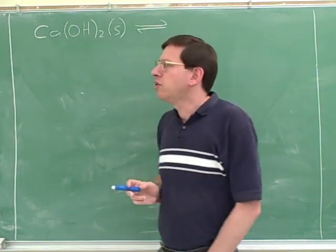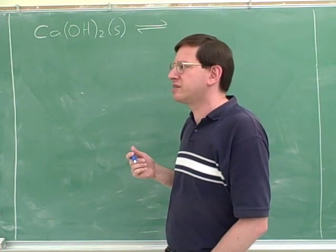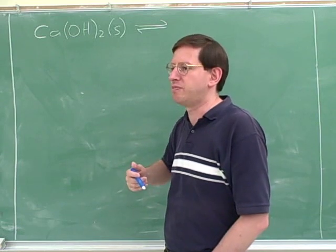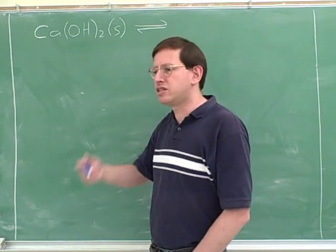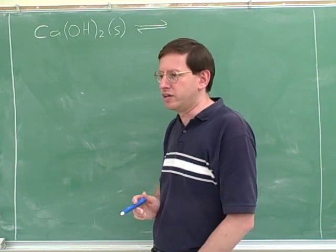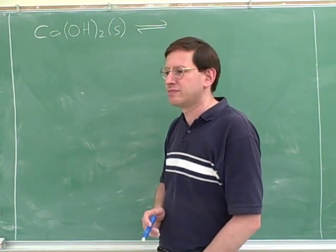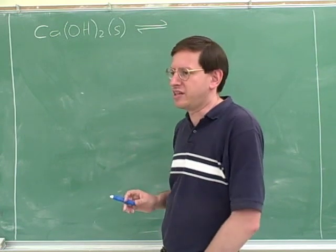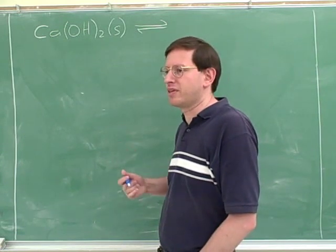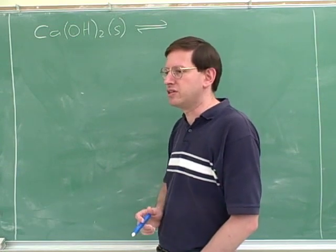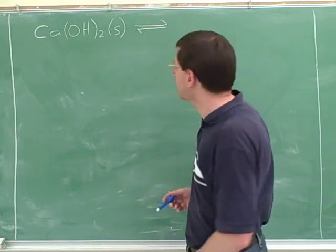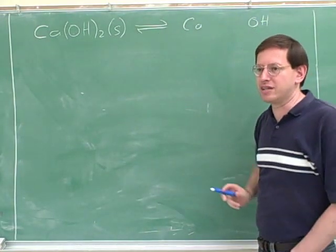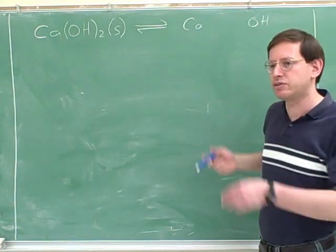Now, why does that matter? When you dissolve things, what types of bonds tend to break, and what types don't? It turns out that ionic bonds tend to break when you dissolve something in water, and covalent bonds tend to not break. We'll just memorize that — ionic bonds break when you dissolve something in water, and covalent bonds generally don't. And I think that's what you did here, because you wrote the calcium and the OH as two separate units in the water, but you didn't split up the O and the H. So that was good.